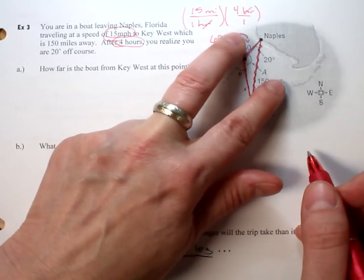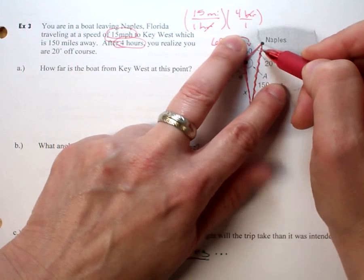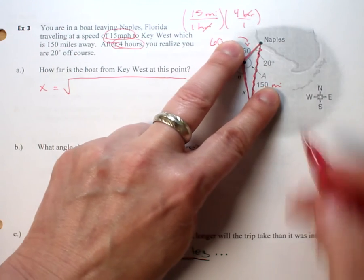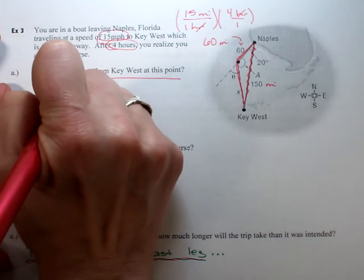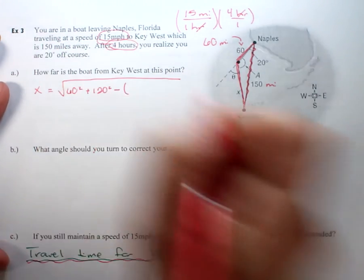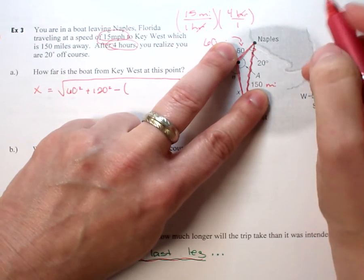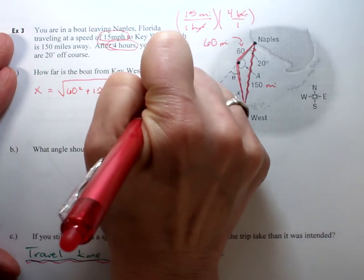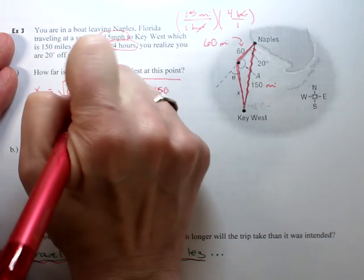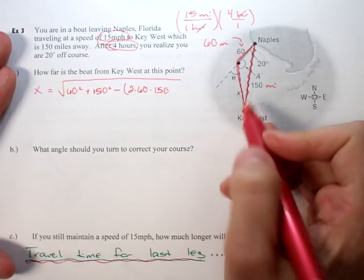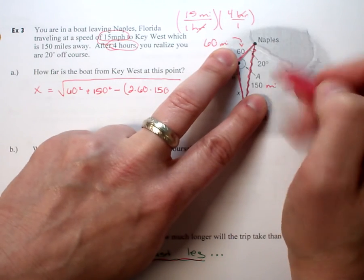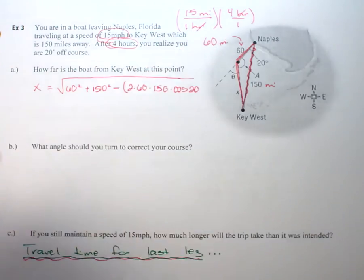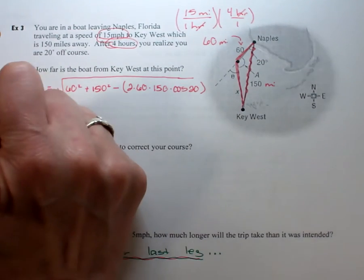Place them on here - we know these two sides and this angle. We're solving for a side, so we set up our square root. Peace fingers first, we're gonna square them and add them together: 60 squared plus 150 squared minus - now we're gonna subtract 2 times our peace fingers, so 2 times 60 times 150, and then I need the cosine of that included angle, cosine 20.